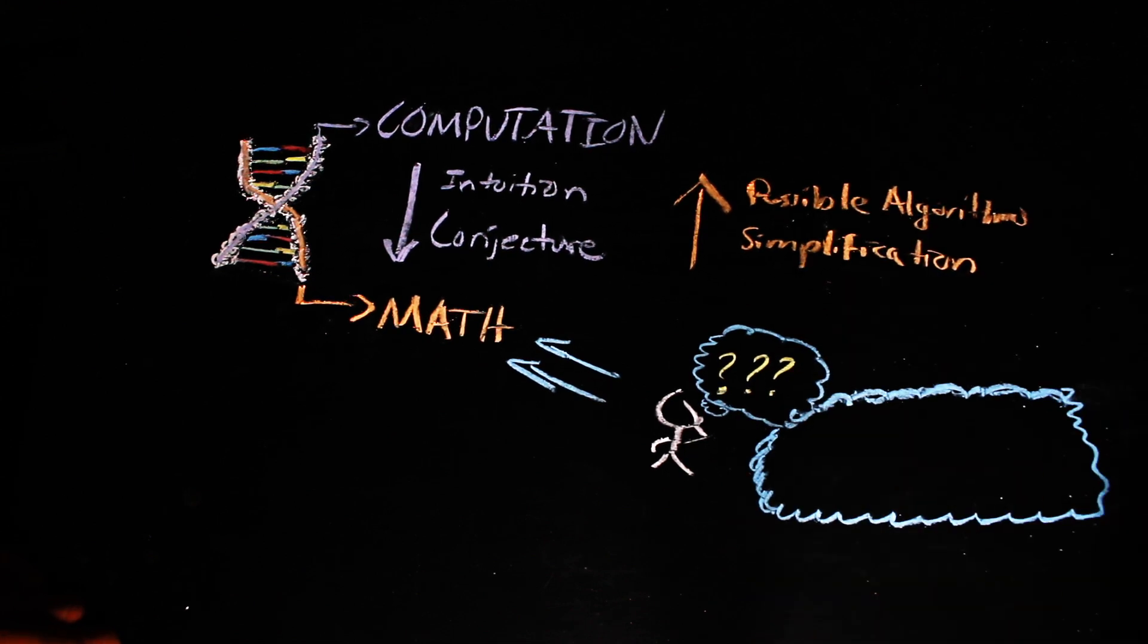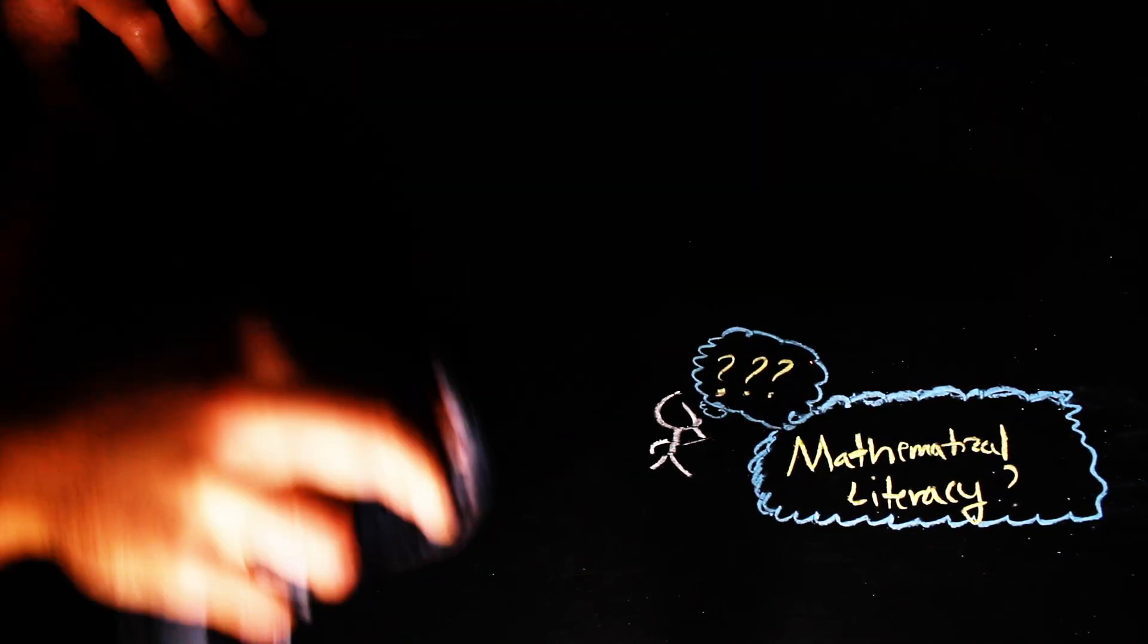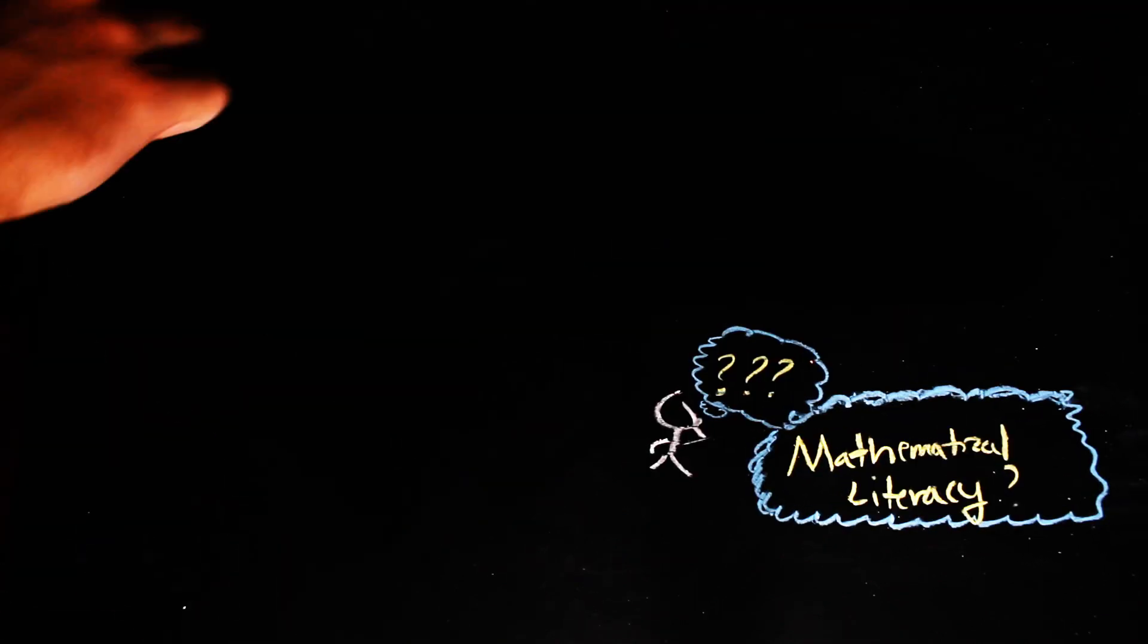That is, how many people have some level of mathematical literacy? Taking into account the difference between mathematics and computation, mathematical literacy can be defined as the ability to understand the logic of proofs.